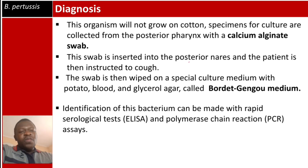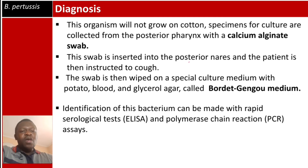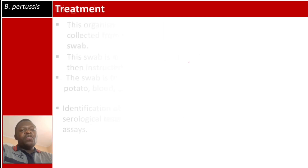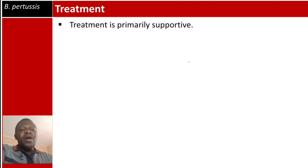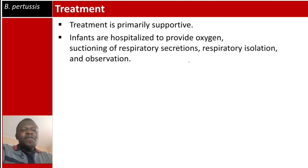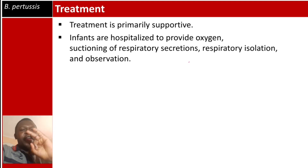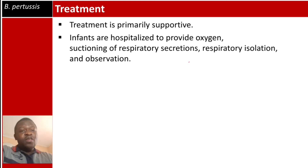Most hospitals now use serological tests like ELISA and polymerase chain reaction (PCR) assays for identification. Treatment is primarily supportive: infants are hospitalized to provide oxygen, suctioning of respiratory secretions, respiratory isolation due to the respiratory route of transmission, and close observation.